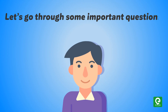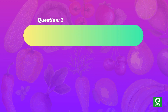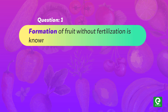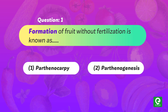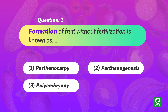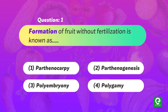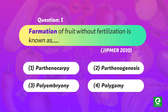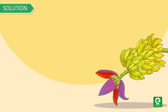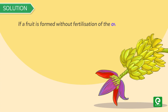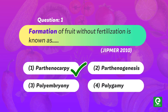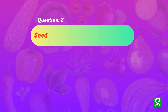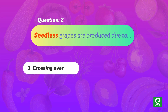Question one, asked in JIPMER 2010: Formation of fruit without fertilization is known as — (1) parthenocarpy, (2) parthenogenesis, (3) polyembryony, (4) polygamy. Solution: If a fruit is formed without fertilization of the ovary, it is called a parthenocarpic fruit and the process is called parthenocarpy. Example: banana. Hence option one is correct.